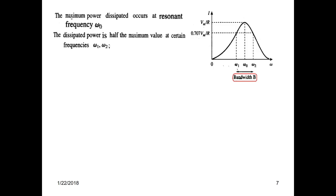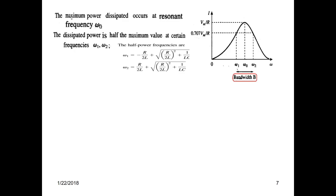The half-power point is defined in three ways. Number one, we can write half P or 0.5P in terms of power. We can also write 0.707, or equivalently 1 over root 2, in terms of current. So when the graph is in terms of current or voltage, the half-power point is written as 0.707 Vm over R or 0.707 Im.